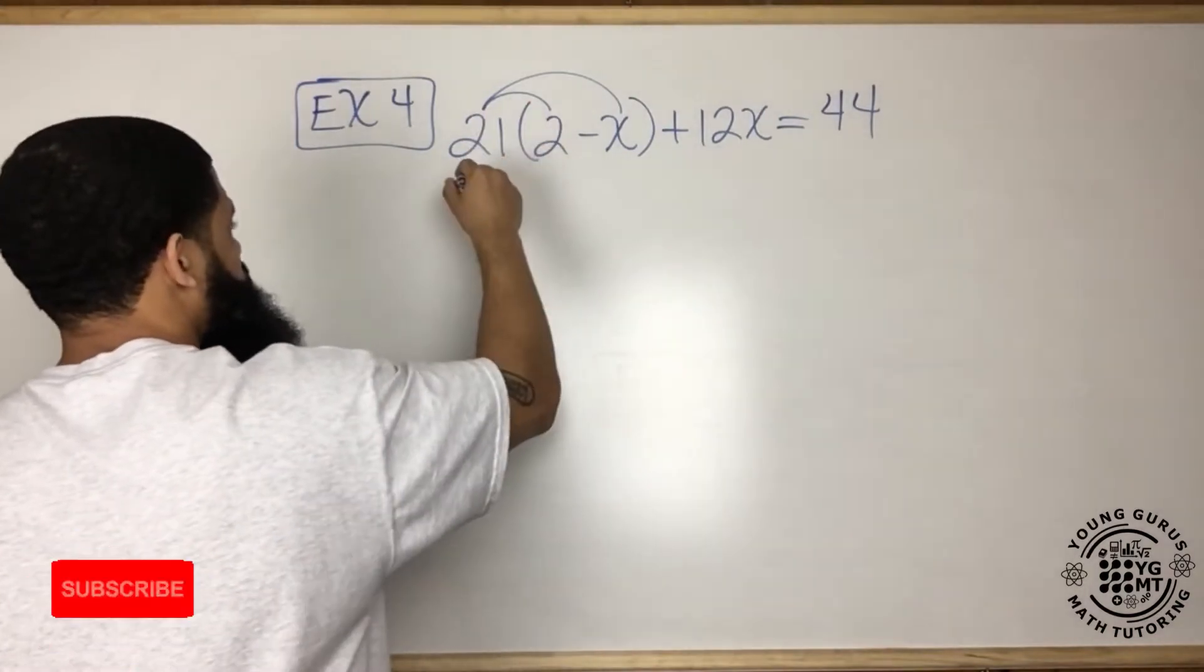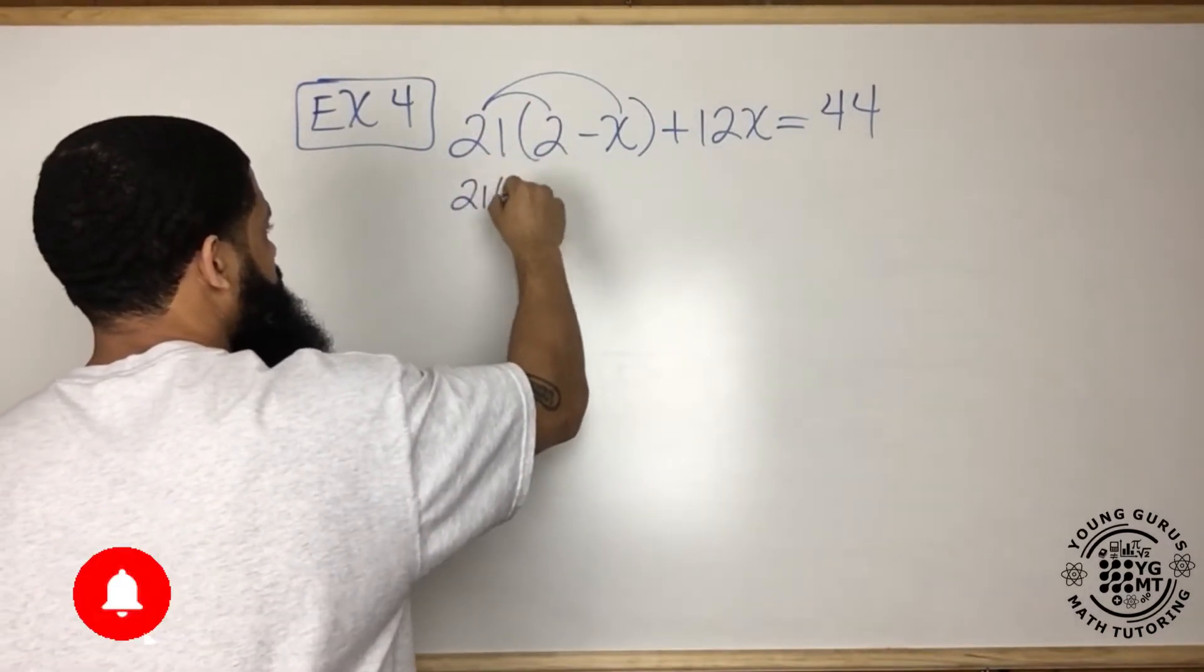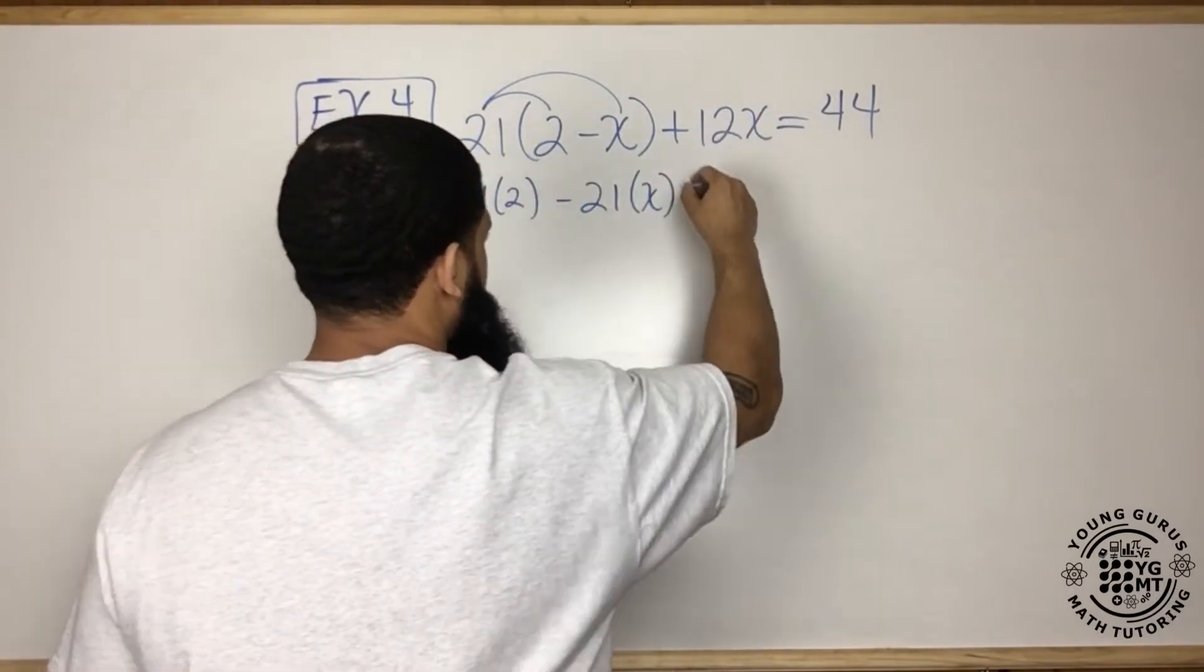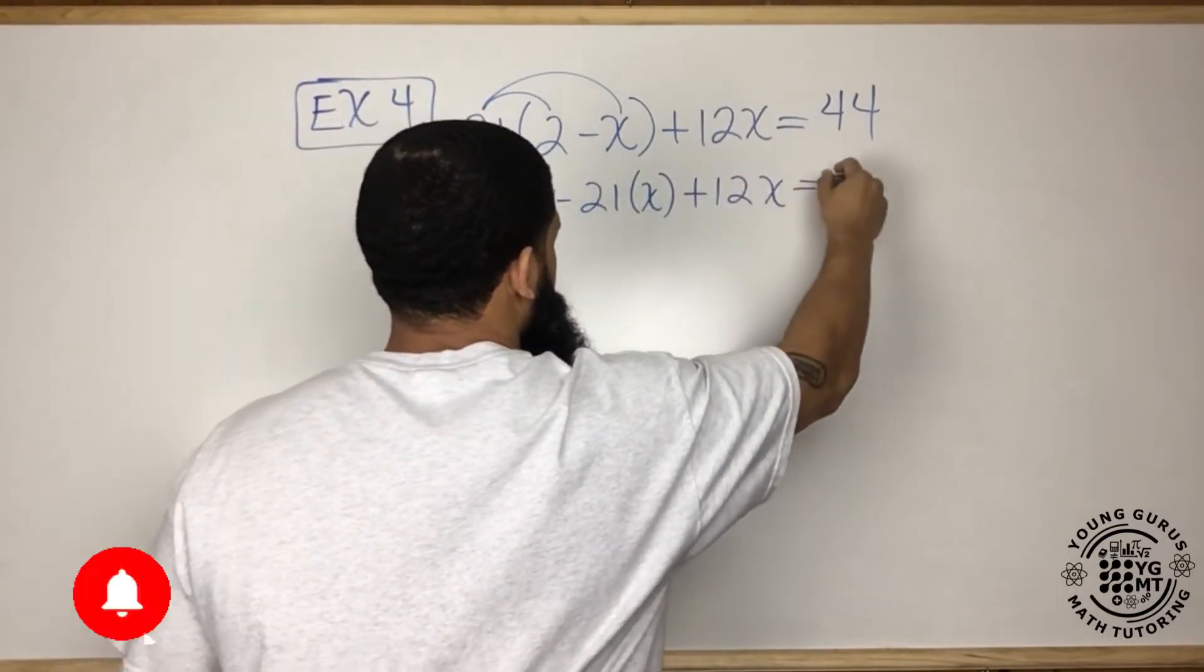So 21 times 2 minus 21 times x, and then bring down the plus 12x, equals 44.